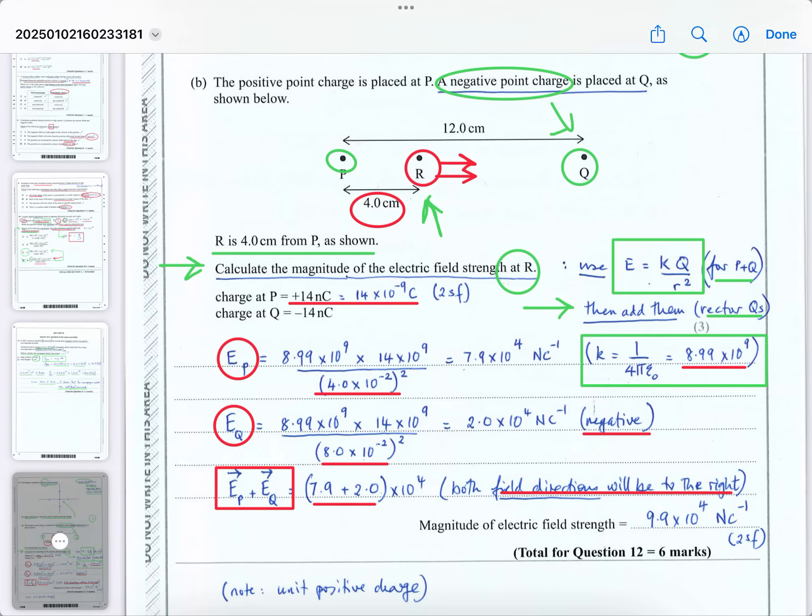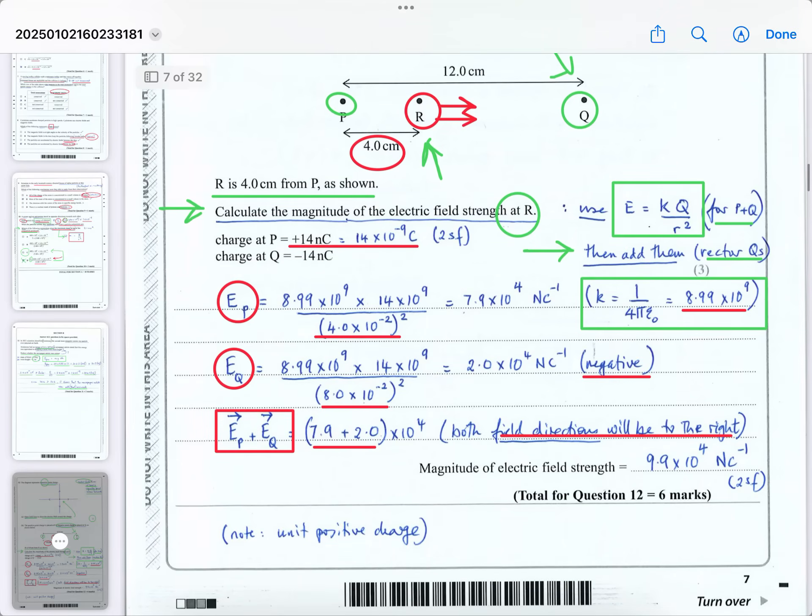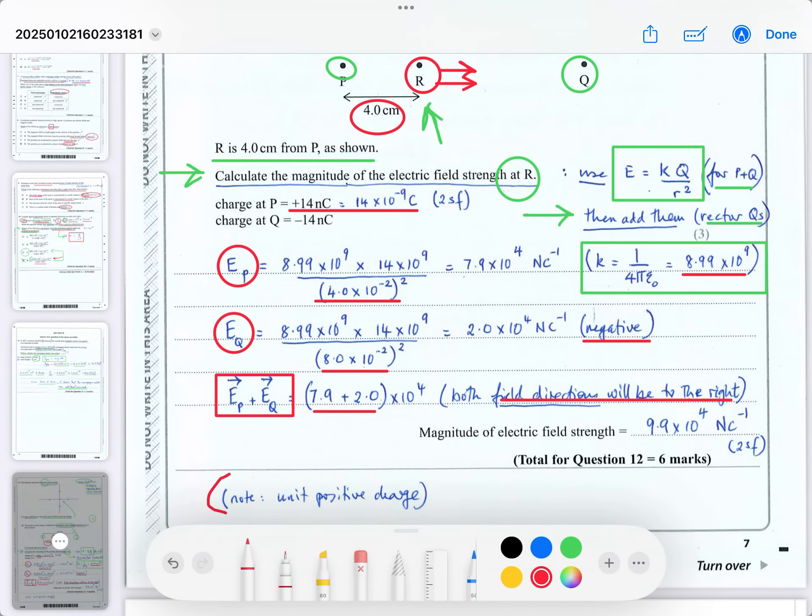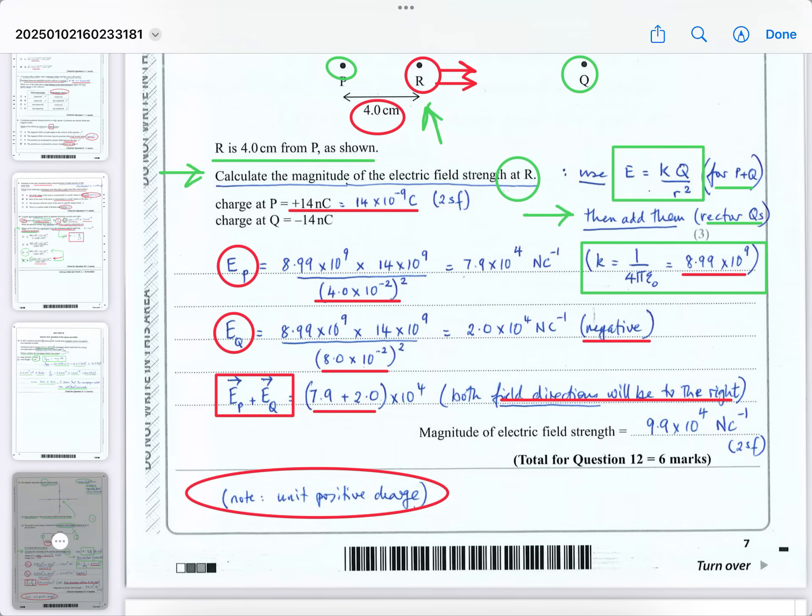And then the magnitude, because you see it's only asking for the magnitude. The magnitude will be 9.9 times 10 to the 4 newtons per coulomb. Because remember, whenever we're looking at field directions, it's a direction a unit positive charge would move. It's the direction a unit positive charge would move if placed at that point. And the point we're talking about is point R. So I hope that makes sense. There are six more marks done in section B. So they start off with shorter questions. And then we're going to do question 13 in this part 2 as well.